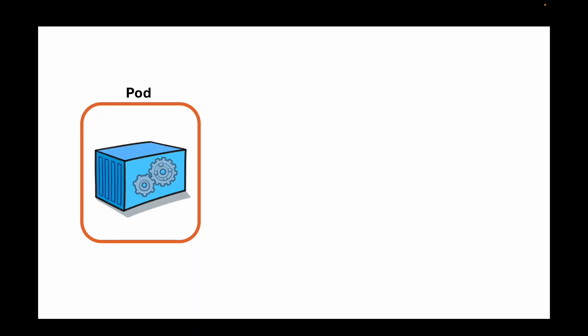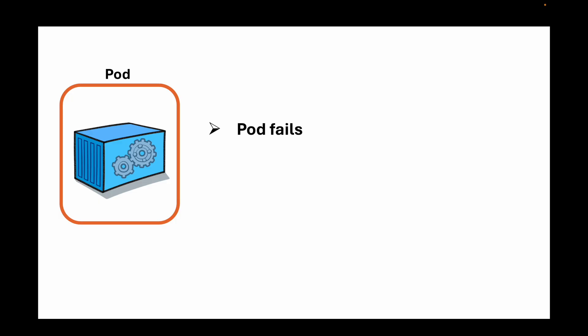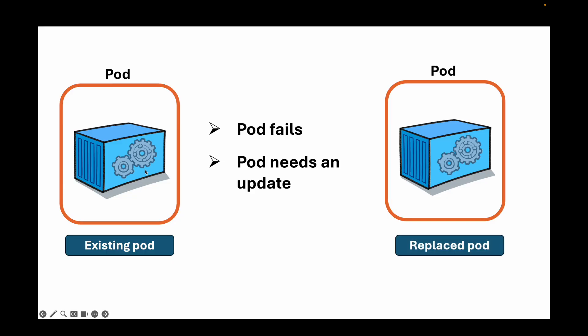When it comes to deploying and updating pods, there is a really important concept: immutability. What that means is once a pod is created it fundamentally cannot be changed. If you want to update something or change some configurations, you cannot do that on the existing pod. Instead, if a pod fails or needs an update, it is replaced by a new pod.